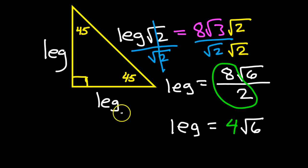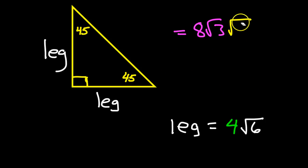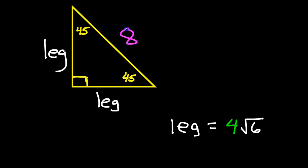So the leg must equal four radical six. That means in the end, here's the bottom line. They told us that the hypotenuse was eight radical three. Okay? I'm just going to bring that in closer again. The hypotenuse was eight radical three.